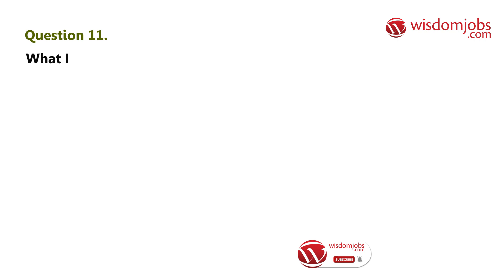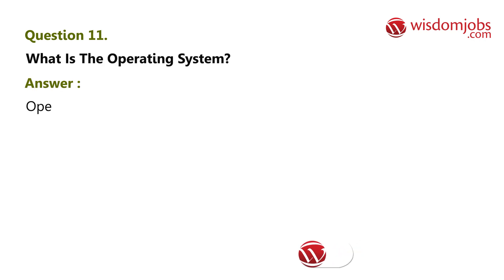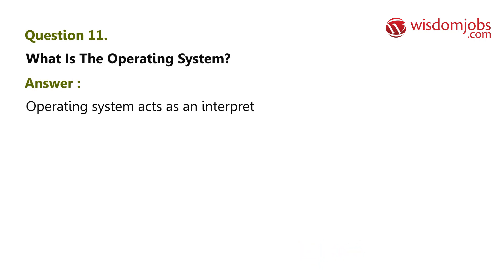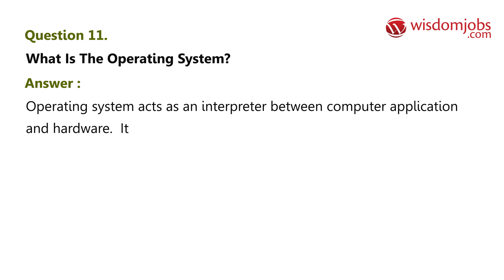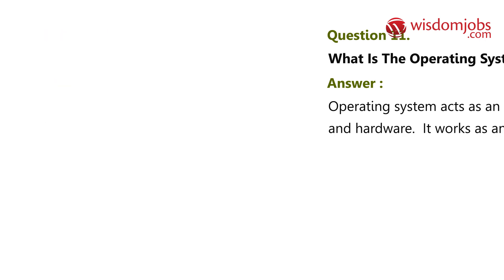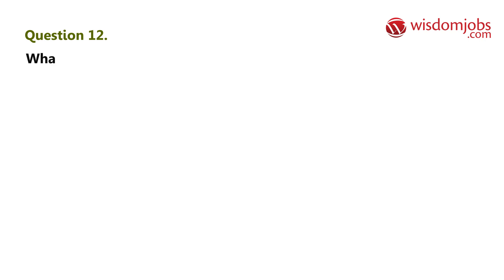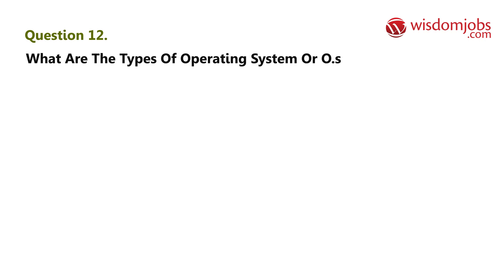Question 11: What is an operating system? An operating system acts as an interpreter between computer applications and hardware. It works as a user interface.